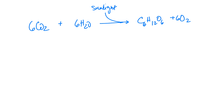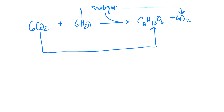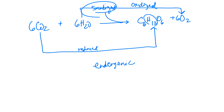Photosynthesis is also a redox reaction. CO₂ is being reduced — it gains hydrogens to become glucose. Water is being oxidized — it loses hydrogens/electrons to become oxygen gas. Photosynthesis is an endergonic reaction because it requires an input of energy — sunlight. Cellular respiration is an exergonic reaction because it releases energy and produces ATP.